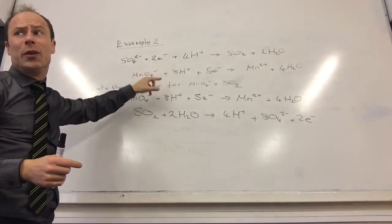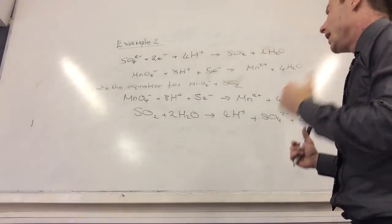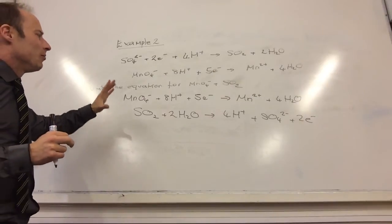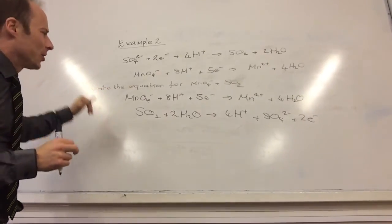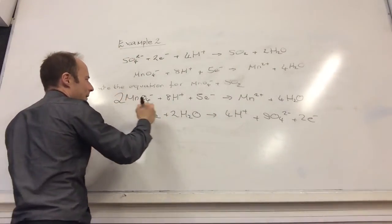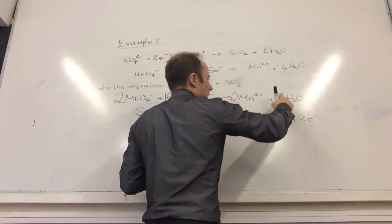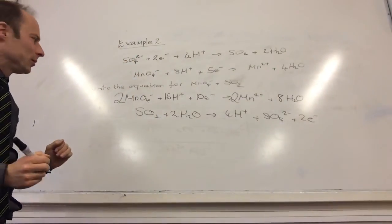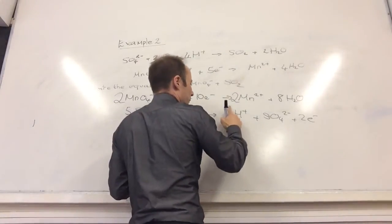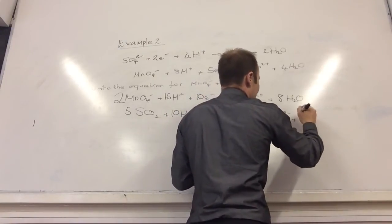Products and reactants are on the correct side — job done. Now electrons: I've got five electrons here and two electrons there. The easiest way is to times the first equation by two and the second by five. So this one times by two becomes: 2MnO4 minus plus 16H+ plus 10 electrons goes to 2Mn2+ plus 8H2O. This one times by five becomes: 5SO2 plus 10H2O goes to 20H+ plus 5SO4 2- plus 10 electrons.